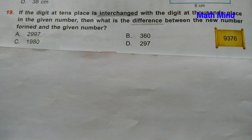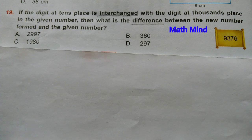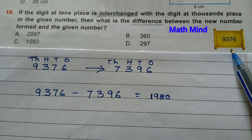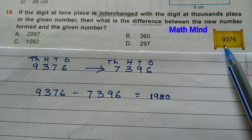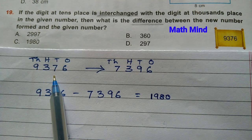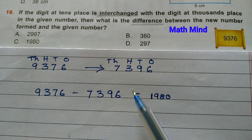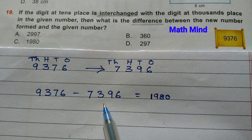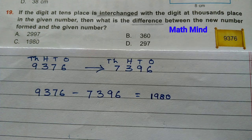Question number 19: If the digit at the 10th place is interchanged with the digit at the 1000th place in the given number, what is the difference between the new number and the original? The given number is 9376 — 9 is in the 1000th place and 7 is in the 10th place. Interchanging 9 and 7 gives 7396. Subtracting 7396 from 9376 gives 1980. Option C is correct.